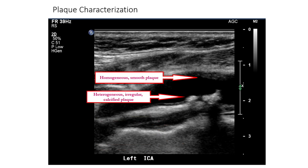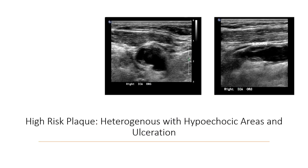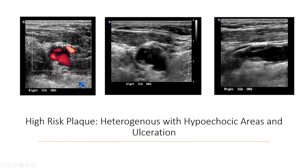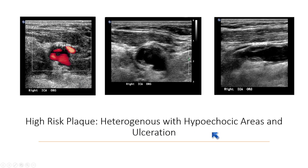Basically, we see plaque, and this is what it looks like. There are high-risk features to plaques — areas that are heterogeneous with hypoechoic regions that can represent soft plaque. And although some may not like the word ulceration because it's nonspecific, there are some plaques that are clearly ulcerated, particularly where you can actually see color flow within the plaque itself. These tend to be higher risk.